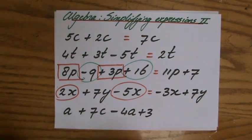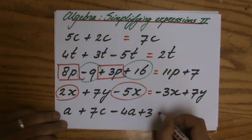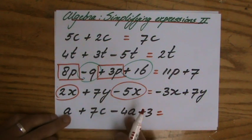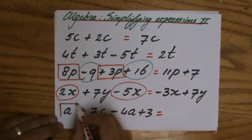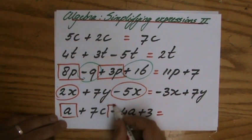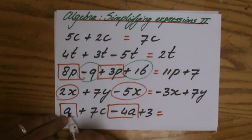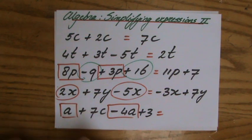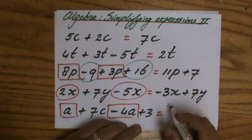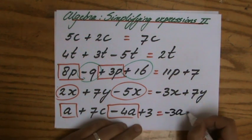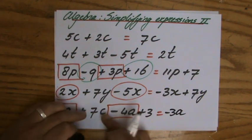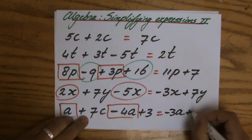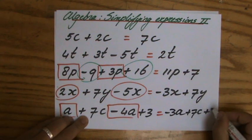Last question here, A plus 7C minus 4A plus 3. Let's identify those like terms. I see two terms with an A. Let me just box that to make sure I don't make a silly mistake, because it's A, so 1A, take away 4A. So 1A take away 4A, that's minus 3A. 7C and 3, those are unlike terms, so plus 7C plus 3.